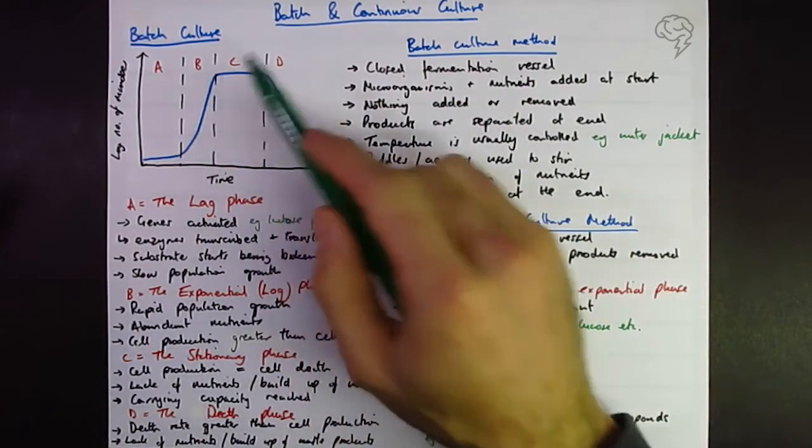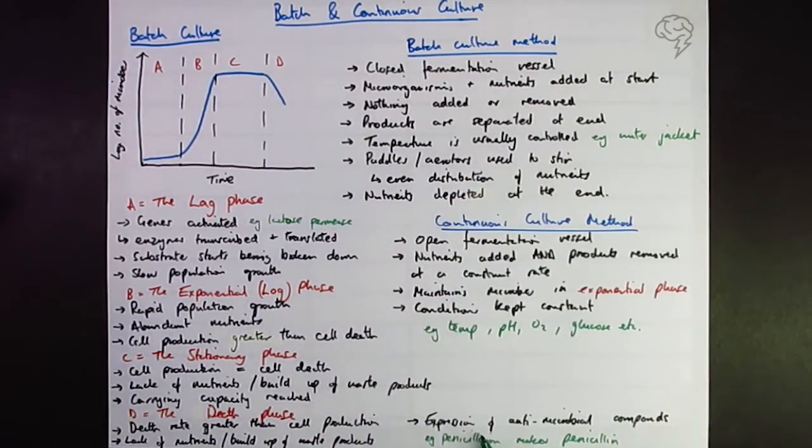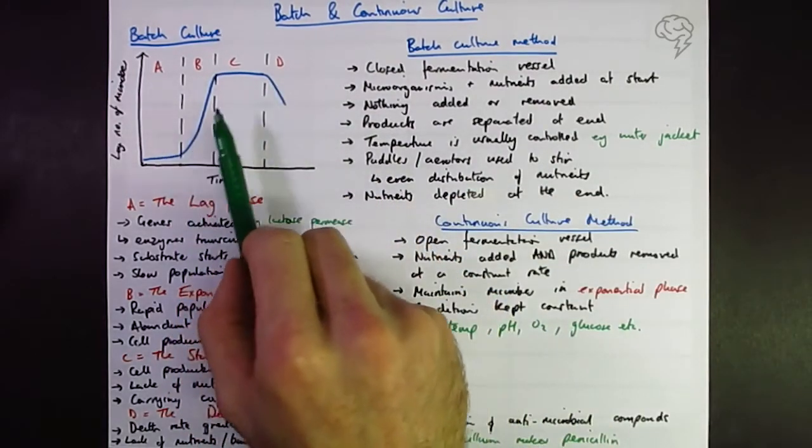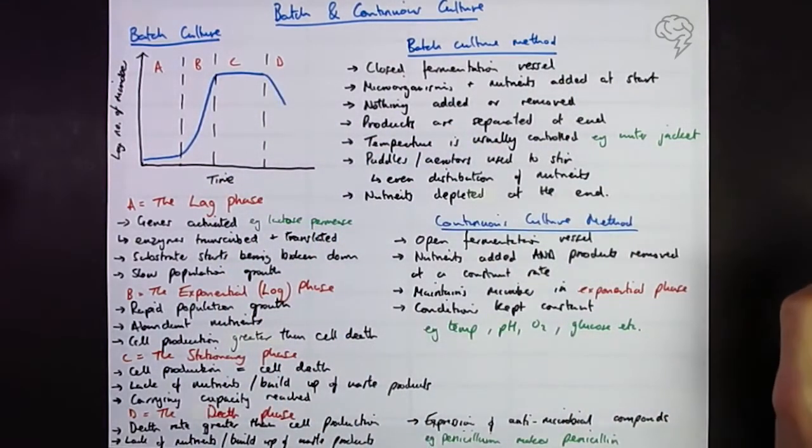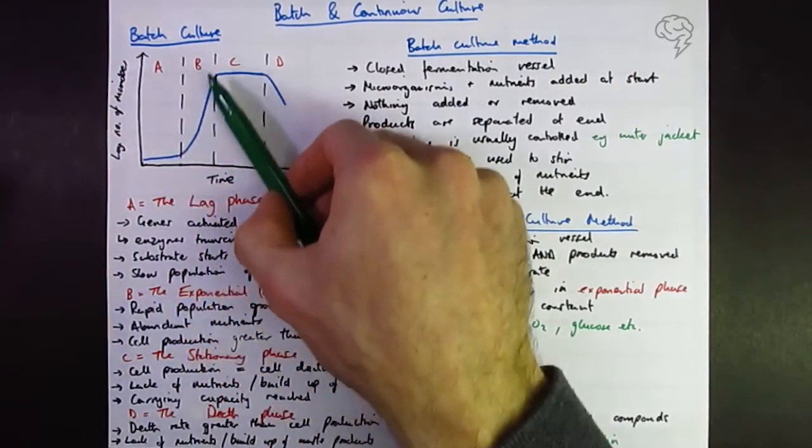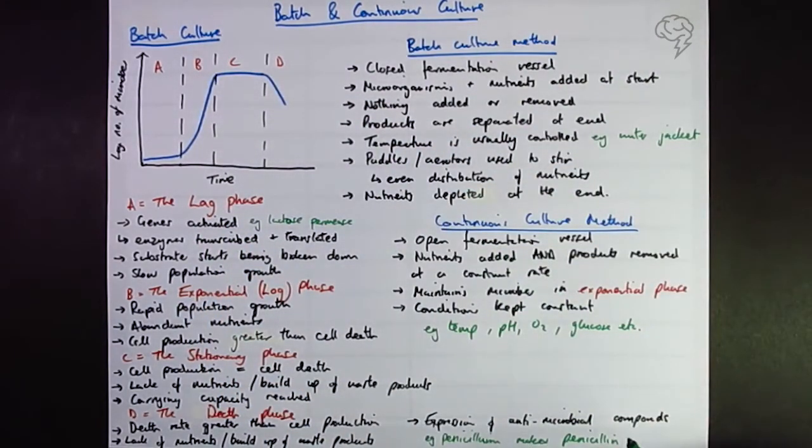Why do we ever use batch culture then if this is maintaining everything in the exponential phase? You're going to get your product much faster. Well, as I mentioned, some genes are only expressed at different phases of batch culture, such as penicillin being expressed in the death phase. And so if you kept penicillium in exponential phase, you're never going to make penicillin, which is the whole point of doing this.